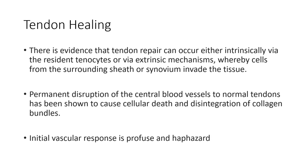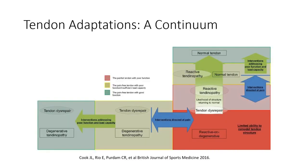This is a great continuum infographic by Jill Cook, who is probably the preeminent global leader in tendon research. It shows that tendons need mechanical loading to be maintained — lack of movement is really not great for tendons. But if we exceed it, we can get reactive tendinopathy, which can lead to tendon disrepair, which can lead to degeneration. There's a continuum along load and time exposed to tendons. That's tendons in a nutshell. Next we'll cover ligaments — kind of a close cousin.